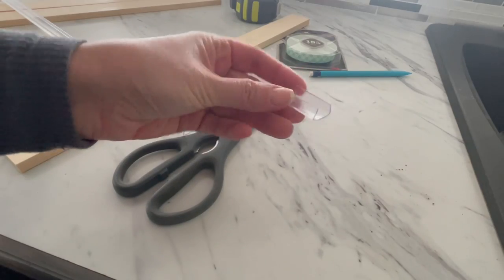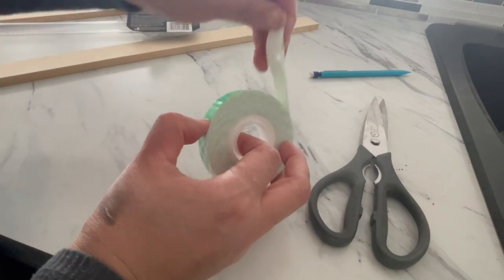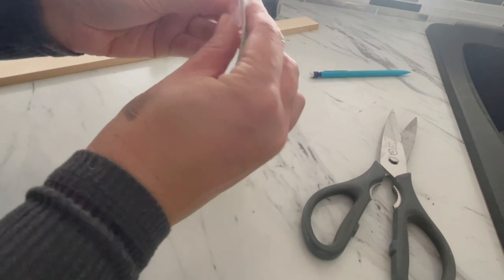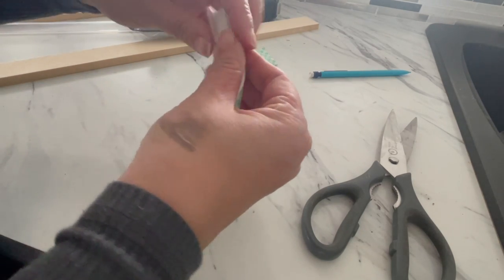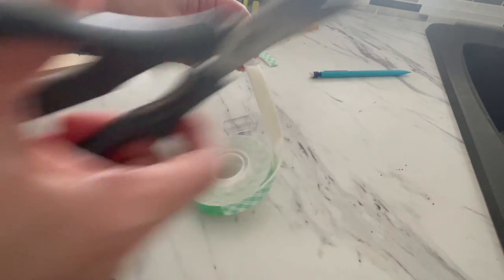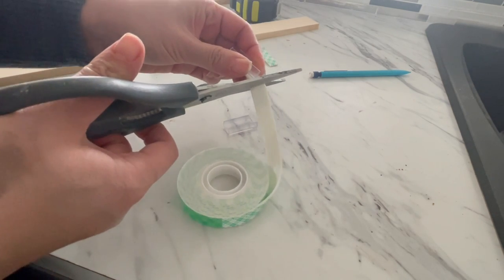Easiest way to cut the C-channel is with pruning shears, but scissors will also do the trick. Then add the mounting tape to the back and trim it to length. You'll want to make up two of these C-channels per divider.